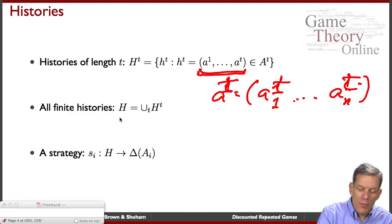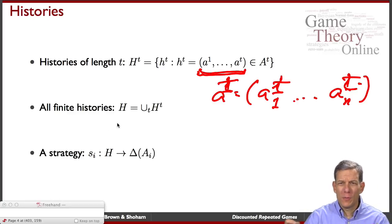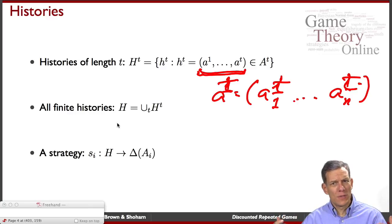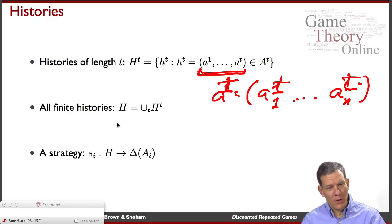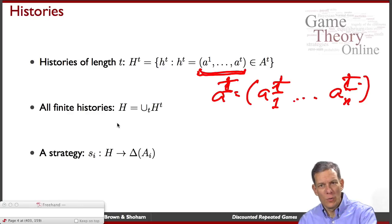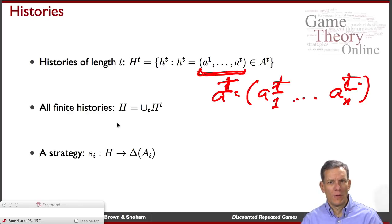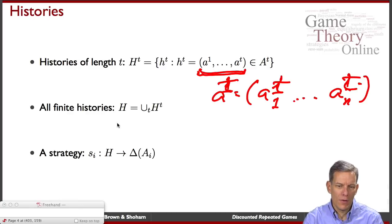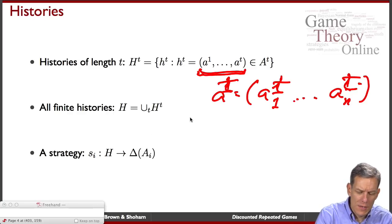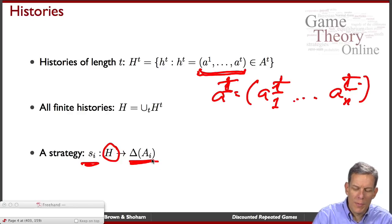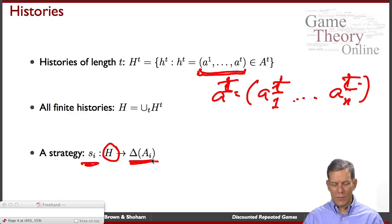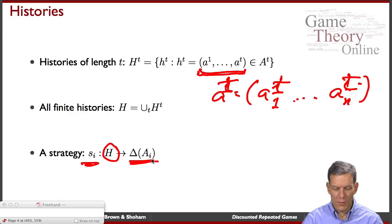We can talk about all finite histories — all possible histories that I could be faced with when playing this game. In an infinitely repeated game, I have to think: what am I going to do if this happens, what am I going to do if that happens? A strategy is a map from every possible history into a possibly mixed strategy over what I can do in a given period faced with a given history.